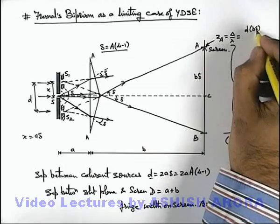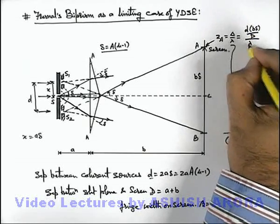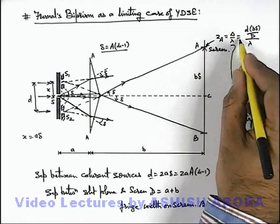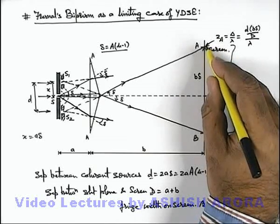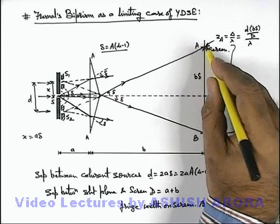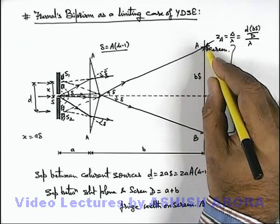At this point we can see the distance from screen center is b·delta, as this angle is delta which is small and this separation is b. So this delta we can write as d·b·delta/D divided by lambda. So this z-value will give us the multiple of wavelength at this point if we calculate the path difference.